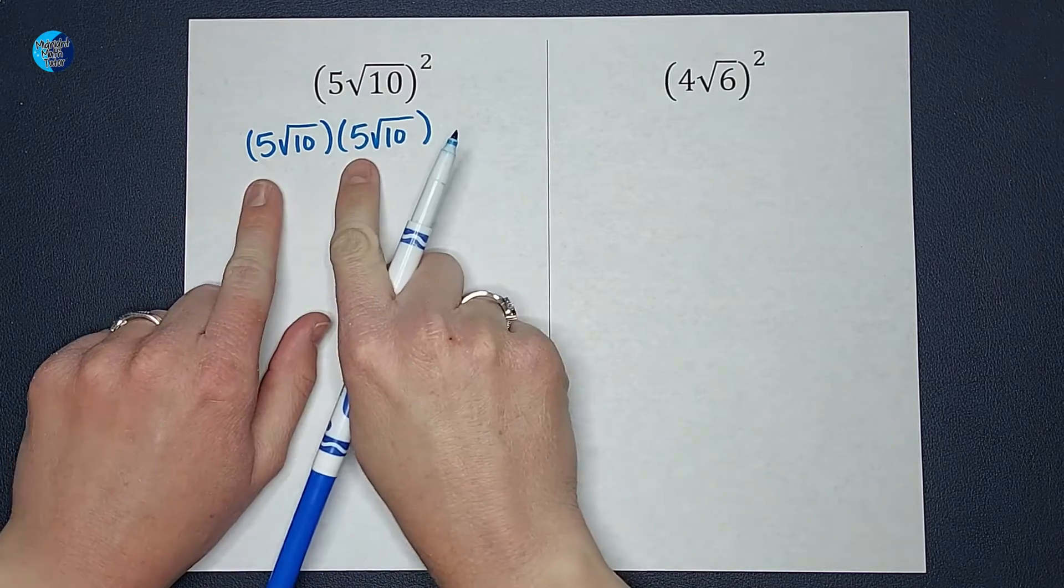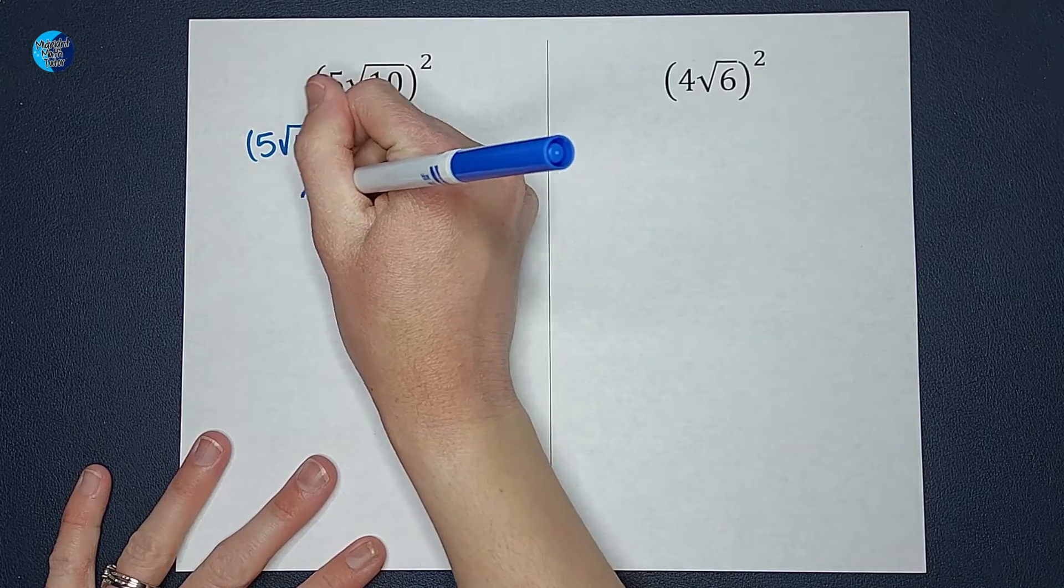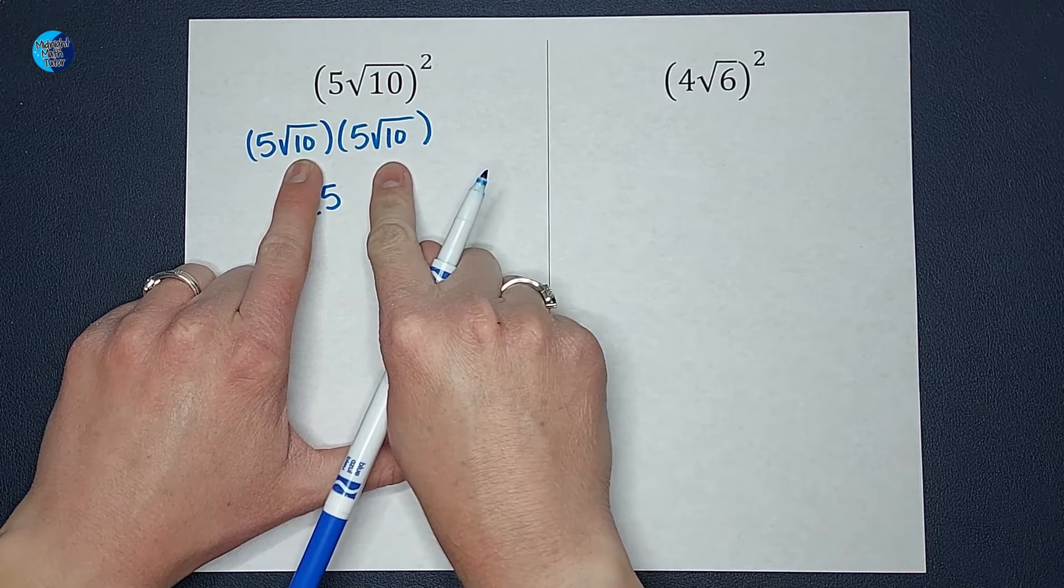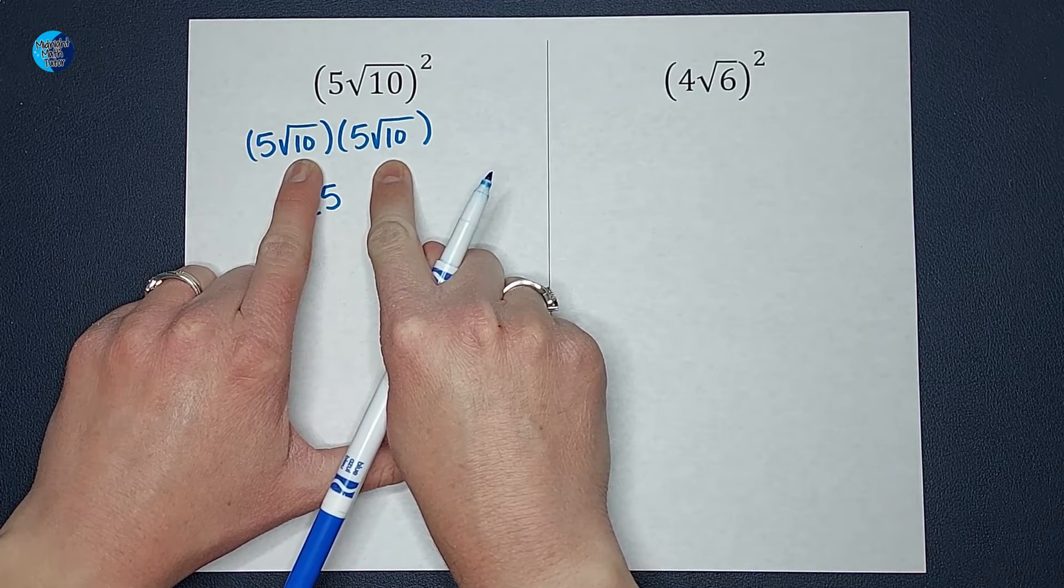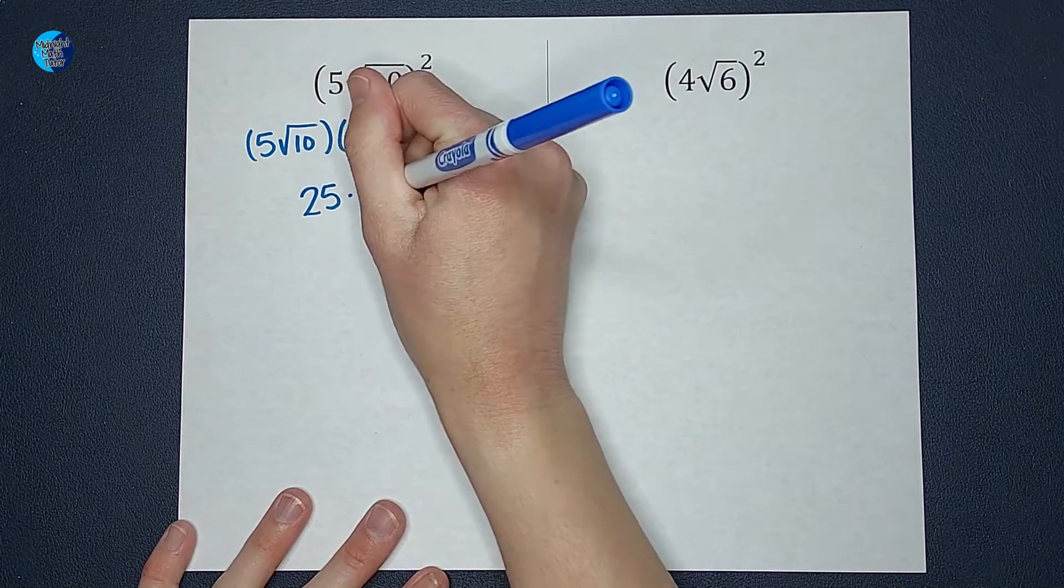What I am going to do is 5 times 5 gives me 25, and the square root of 10 times the square root of 10 ends up just being 10. So 25 times 10.